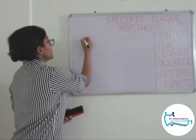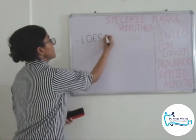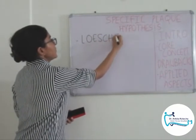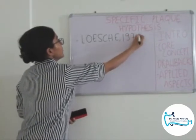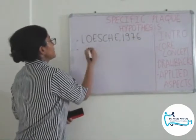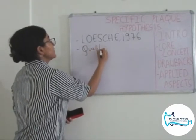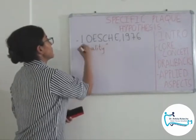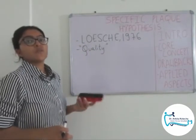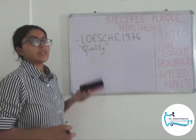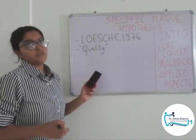Specific Plaque Hypothesis was given by Loesche in the year 1976. This hypothesis focuses on the quality of the plaque rather than quantity of the plaque, as focused in non-specific plaque hypothesis. This is the first difference between specific and non-specific plaque hypothesis: non-specific plaque hypothesis focused on the quantity of plaque, whereas specific plaque hypothesis focuses on the quality of the plaque.